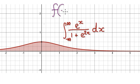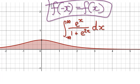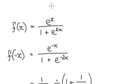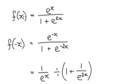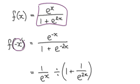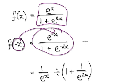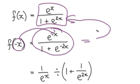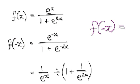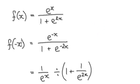Remember, an even function is when you apply the negative version and it equals the original version. So here you've got our original function. To show that it's an even function, we will put the negative version in here and then slowly manipulate it to get it back to this form here. Then we would know that if you apply the negative version, it will equal the normal version, meaning it's an even function.